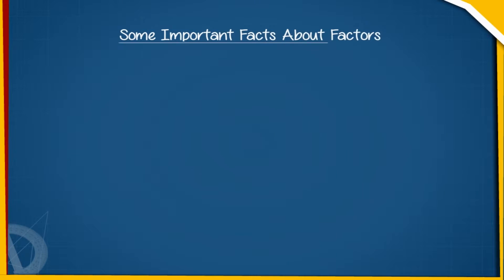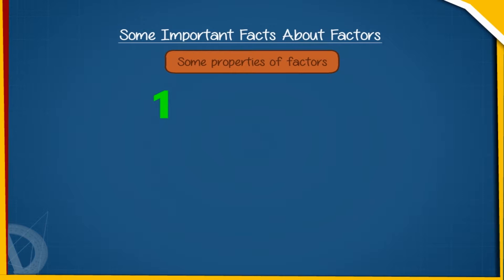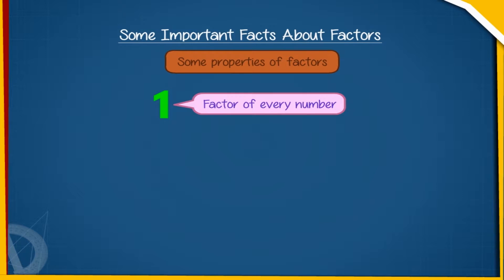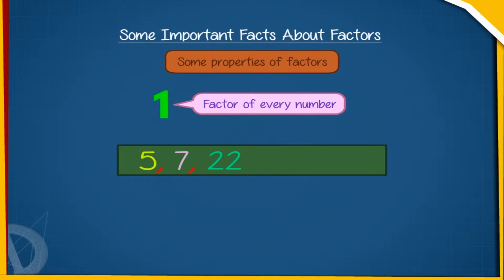Some important facts about factors. Now we will learn some properties of factors. 1 is the factor of every number. For example, if we take any number like 5, 7, 22, 45, or 200, each number has 1 as a factor because each number is exactly divisible by 1.